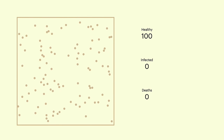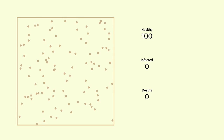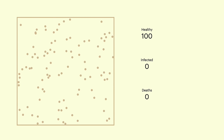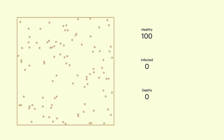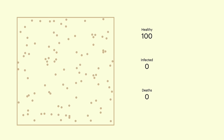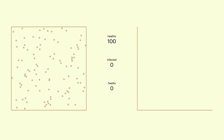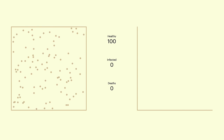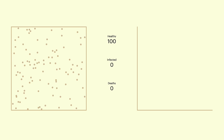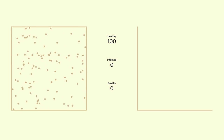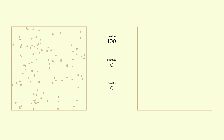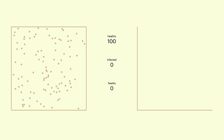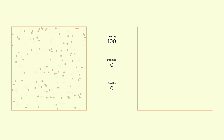Let's also add a graph on the right that will visualize the change in the health metrics. The red line will indicate the number of sick people and the black line will indicate the number of dead people. So we are good to go now. Let's introduce our patient zero, infected with the virus, and see what happens.